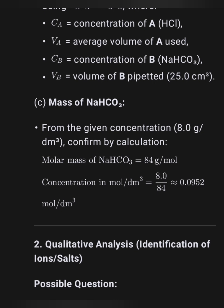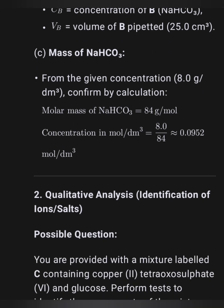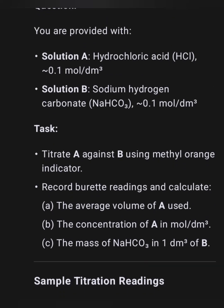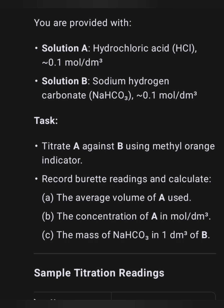Now let's dive into the question and answer. Example titration question one: you are provided with sodium hydrogen carbonate solution and hydrochloric acid. You are asked to titrate A against B using methyl orange indicator, record various readings, and calculate the average volume of A used, the concentration of A in mol/dm³, and the mass of NaHCO₃ in one dm³ of solution B. This is a sample reading — you can copy this format in the exam.